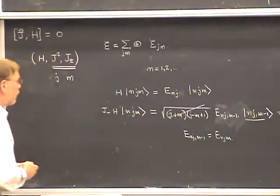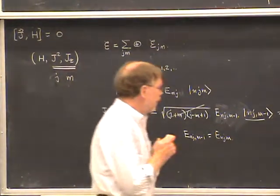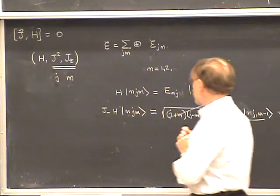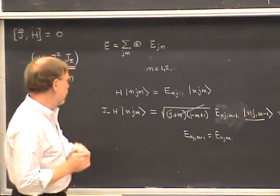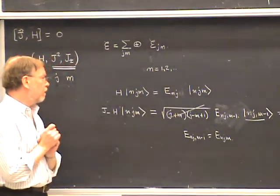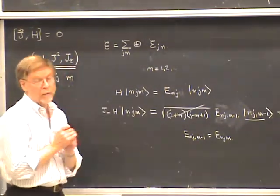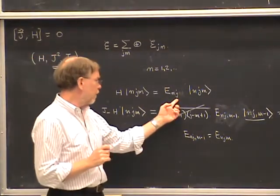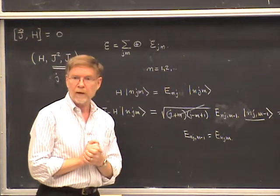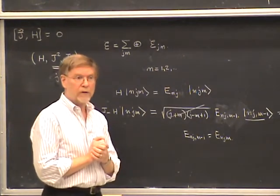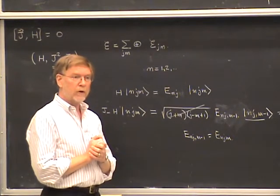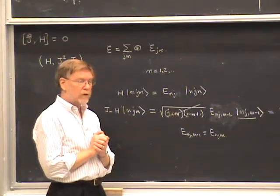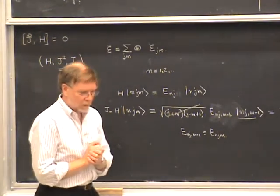Going back to the original statement, we can drop M, and we have a generalization of what we learned for central force problems: for any isolated system, the energy levels are characterized by an angular quantum number and possibly other quantum numbers, but they don't depend on the magnetic quantum number. This means the energy levels are actually degenerate subspaces characterized by angular momentum with a degeneracy of 2J+1 — a degeneracy that arises purely on the basis of rotational invariance.